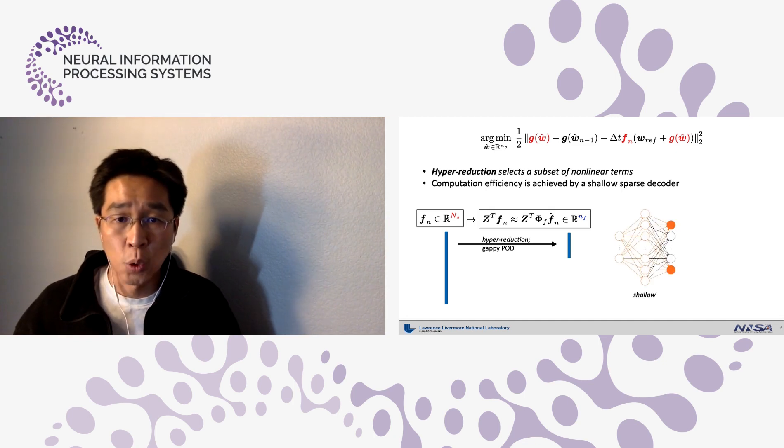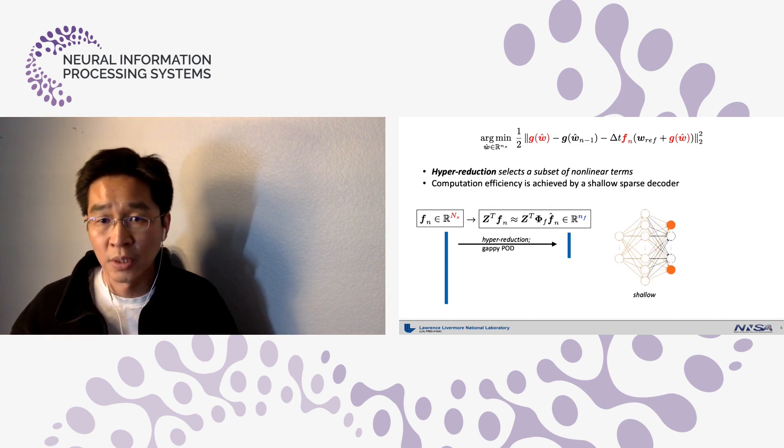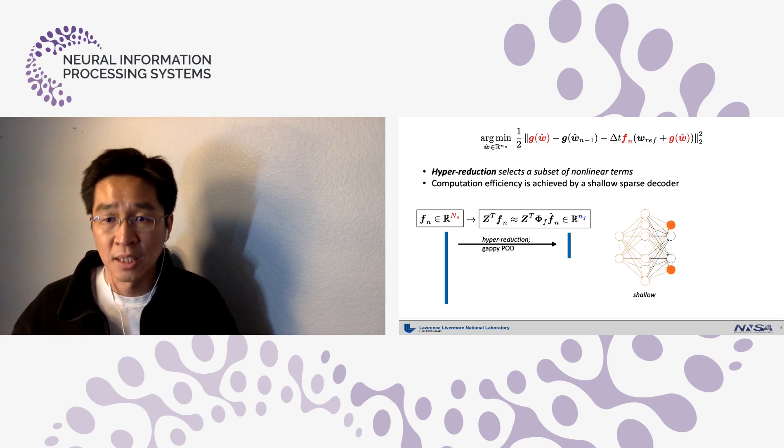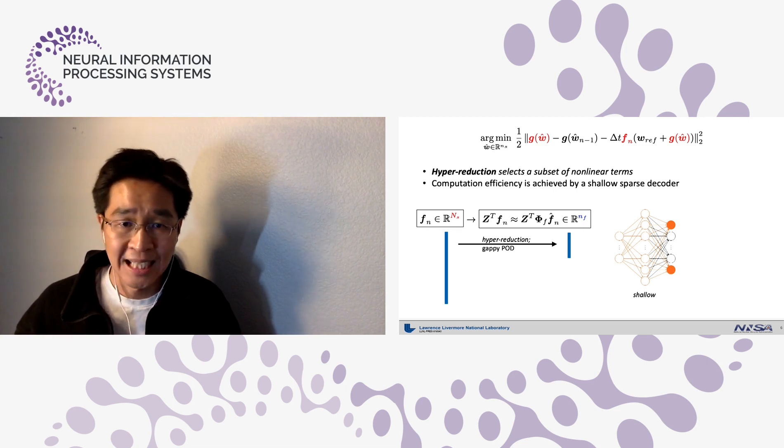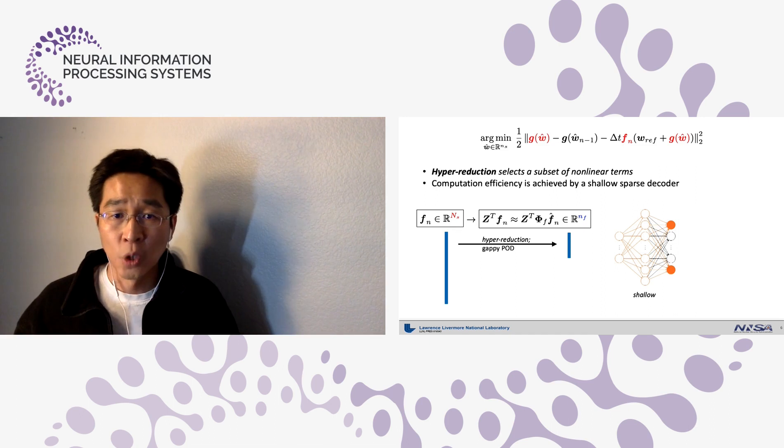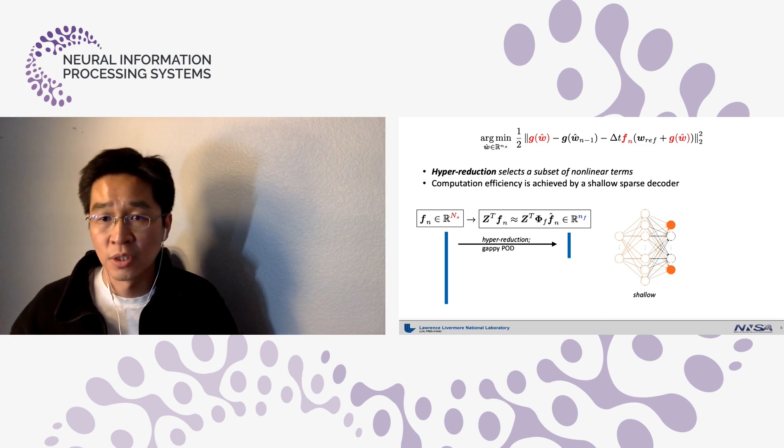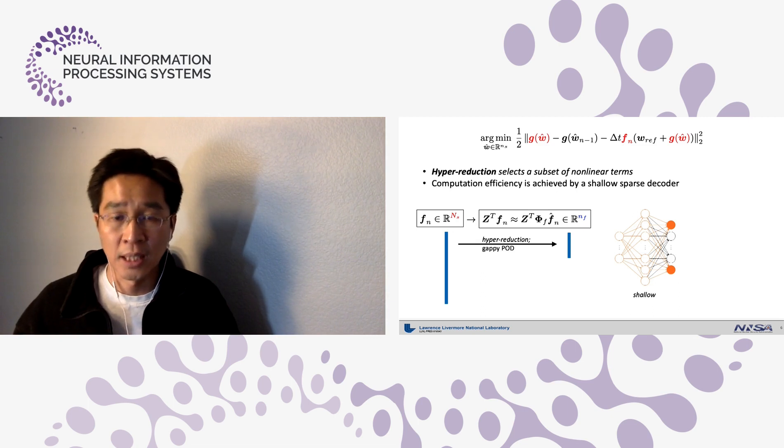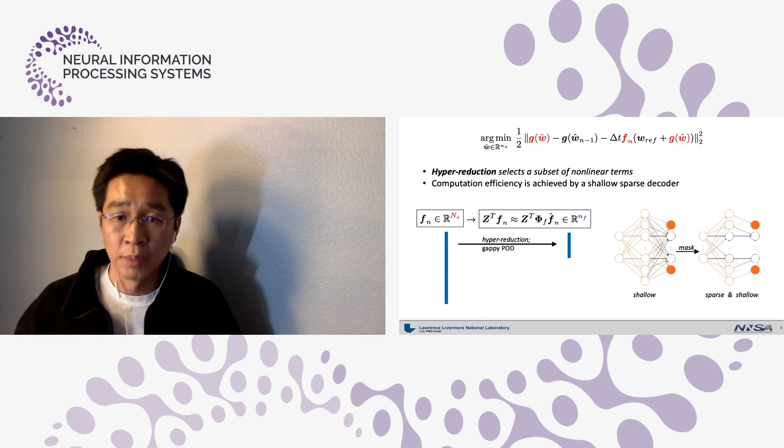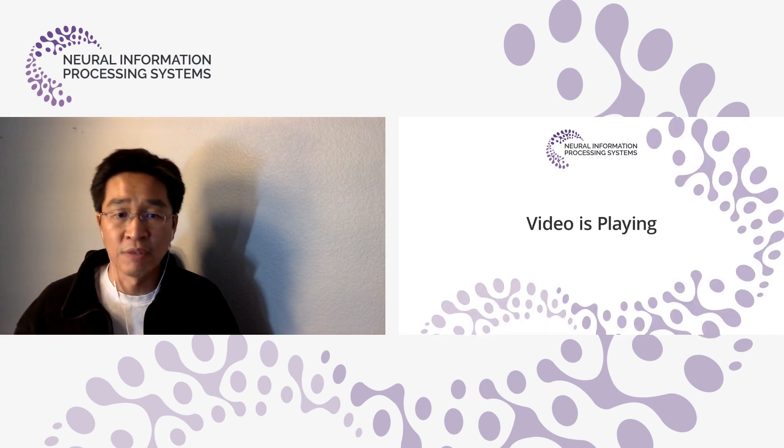This implies that only a subset of the neural network outputs need to be computed as illustrated with the orange disks in this decoder. Note that the shallower network involves the less number of hidden nodes for the computation of the selected outputs. Furthermore, we build a sparser network by applying a mask to further increase the efficiency.